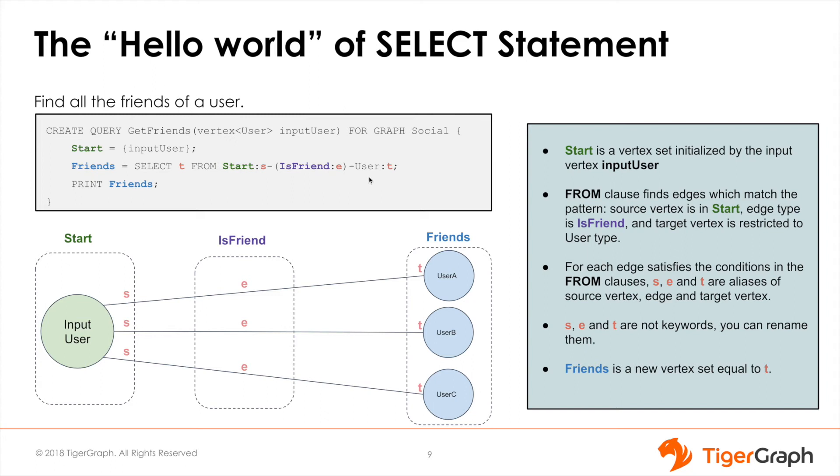You may notice that T, S, and E are all highlighted a different color. They're known as aliases. To better help you understand what they are and how they work, we've included this diagram below.